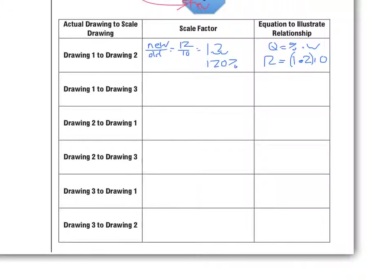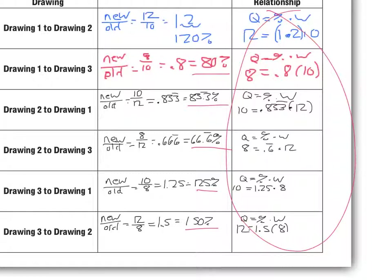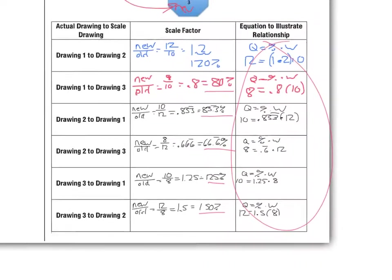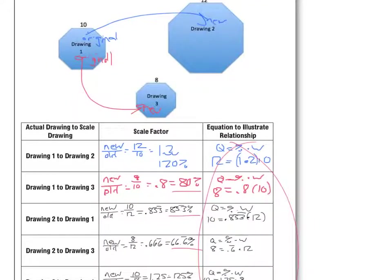Your chart should look like this completely filled out. Here we have 80%, 83.3%, 66.6 repeating percent, 125%, and 150%. The check is that we make sure the equations actually work out right — and if we calculate those out, they do come out right. We can also do mental checks in terms of thinking about reductions and enlargements: going from drawing 2 to drawing 1 should definitely be a reduction, and our percentages confirm that it is.